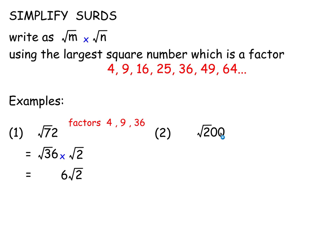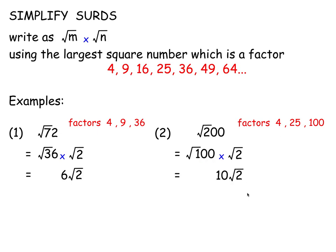Here's root 200. The biggest square number that's a factor is 100 — not 4 or 25, we want 100 times 2. The biggest square number that goes into 200 is 100. The square root of 100 is 10, so it's 10 root 2. Using 4 or 25 would simplify it but not fully simplify it.